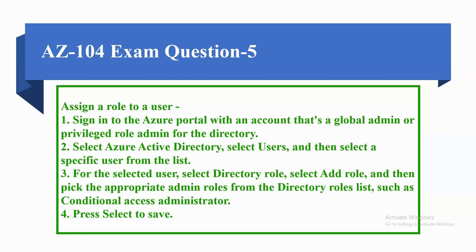Here is how to assign a role to the user: Step 1, sign in to the Azure portal with an account that is a Global Admin or Privileged Role Admin for the directory. Step 2, select Azure Active Directory, select Users, and then select the specific user from the list. Step 3, for the selected user, select Directory Role, select Add Role, and pick the appropriate role from the directory role list, such as Conditional Access Administrator. Step 4, press Select to save.